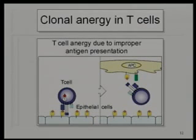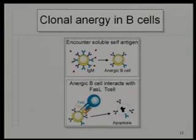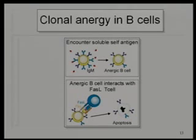Here is an example of anergy: if T cells interact with antigen without a co-stimulatory molecule — CD28 interacting with CD80/86 — then later when this cell comes across the antigen again, even if it is properly presented, it is not going to respond. It has become anergic. Similarly, normal cells that come across large amounts of antigen can down-regulate their receptors and almost behave as if they are not fully differentiated — they also become anergic.